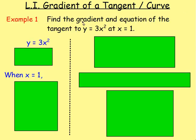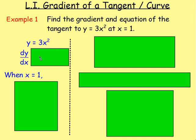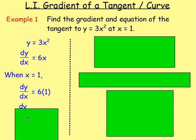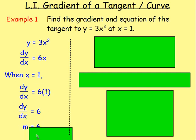Example one: find the gradient and equation of the tangent to y equals 3x squared at x equals 1. First, to get the gradient we differentiate. Differentiating y equals 3x squared we get dy by dx. 3 times 2 gives you 6, decrease the power by 1, and we get 6x. We're asked for the gradient when x equals 1, so dy by dx equals 6 times 1, which is 6. The gradient is 6.